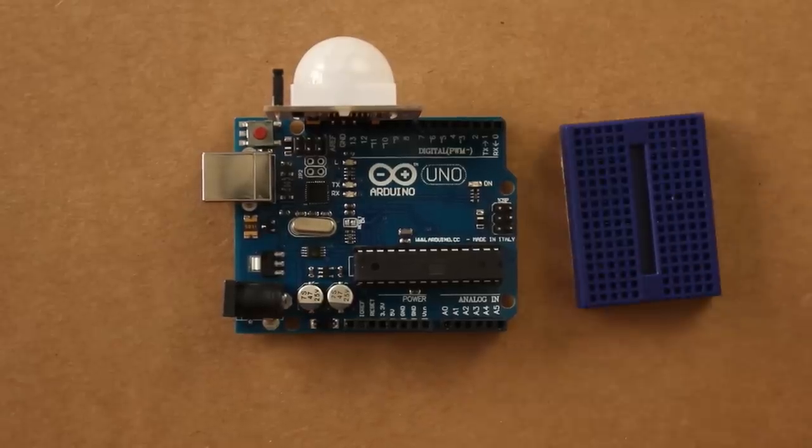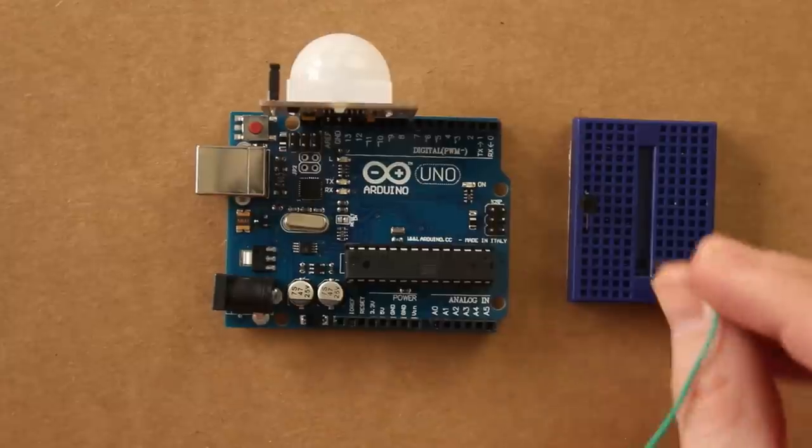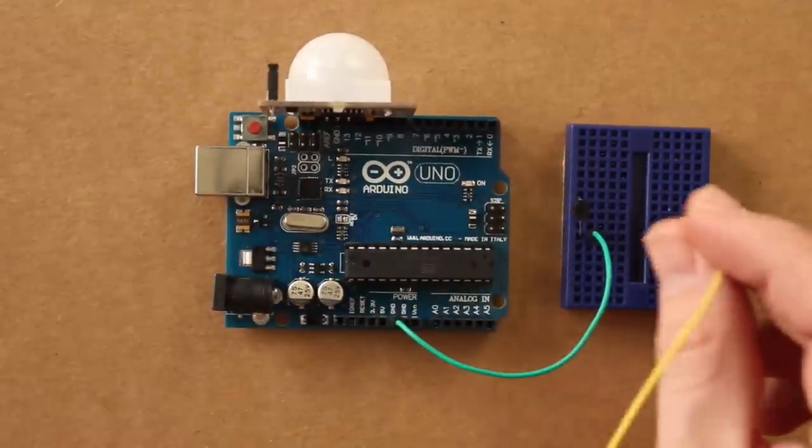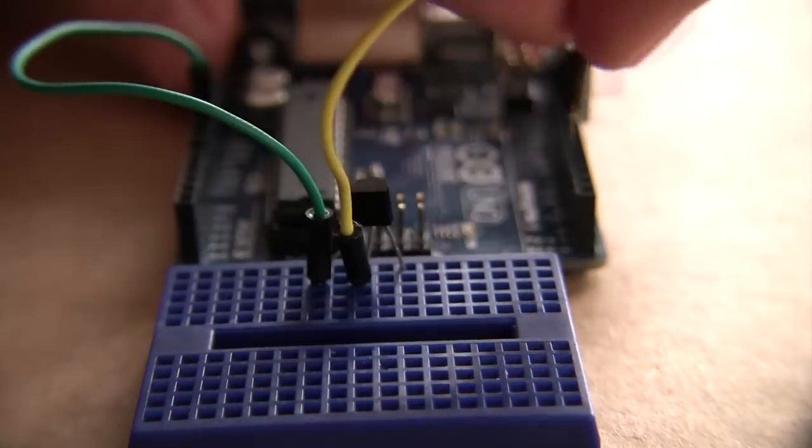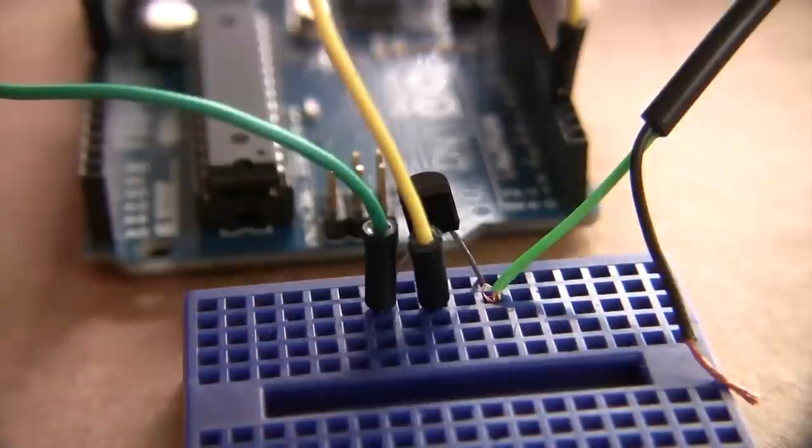After that, let's start plugging stuff into the breadboard. First the transistor. You want to run a wire from this leg to the ground port on the Arduino. Then wire the middle leg to pin 3. For the third leg, first run a wire to one side of the motor.